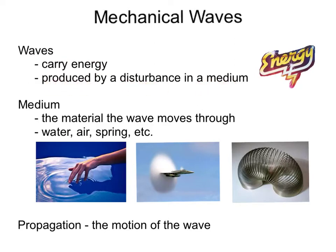What is a medium? A medium is the material the wave moves through. For these waves here, this person is creating a disturbance in the water, and thus producing waves in the water. Here we have a fighter jet producing a disturbance in the air, where air is the medium for these sound waves. Here we have a slinky, which provides the medium as a spring for waves down the slinky.